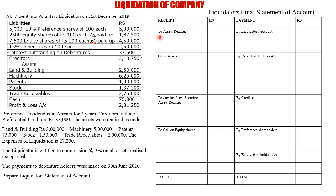We always start from the receipt side. The very first item is assets realized, and under that we only have cash and bank. The cash given in the question on the asset side is 75,000, so we record cash: 75,000.